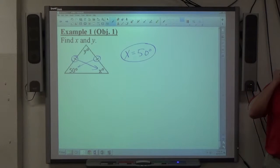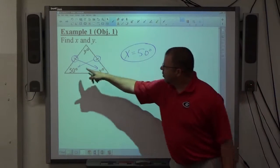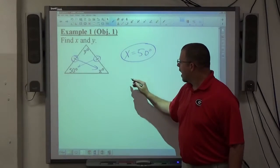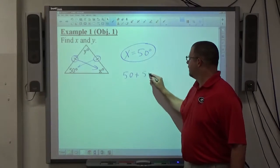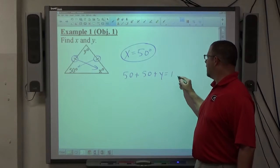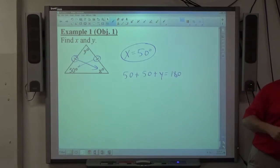That's called the angle sum theorem. It's a property of triangles that says all three angles add up to 180. And since we know two of the angles, we now can use that. So I know that 50 plus 50 plus Y has to be 180. Again, property states all the angles add up to 180.